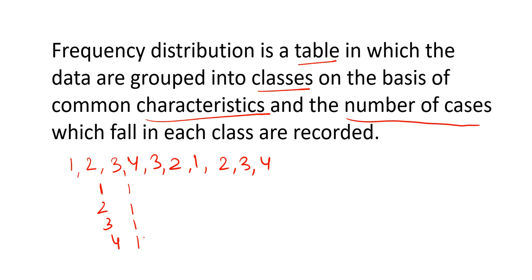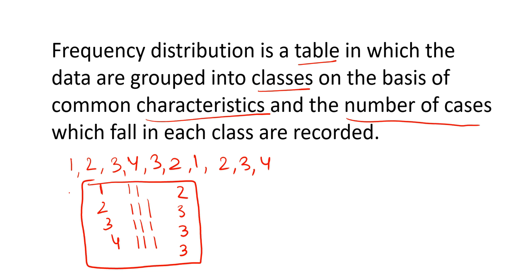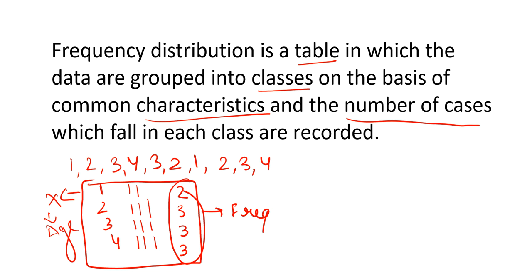So the tally marks go: 1, 2, 3, 4. Again we have a 4, again we have a 3, then we have a 2, then we have a 1, then we have a 2, then we have a 3 and then we have 4. Now this x is representing our ages — these are our common characteristics represented by age. And these are my frequencies.